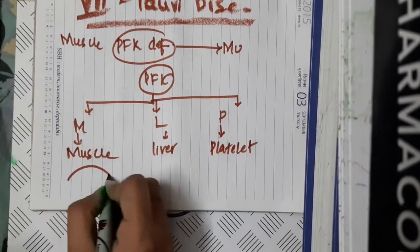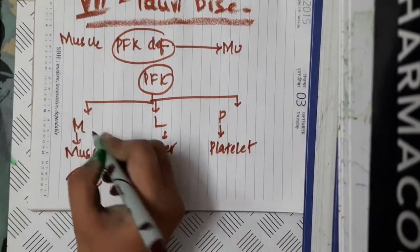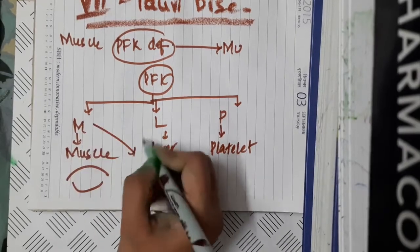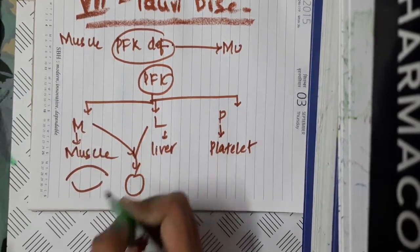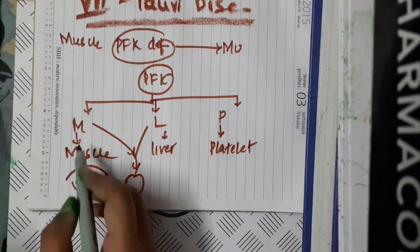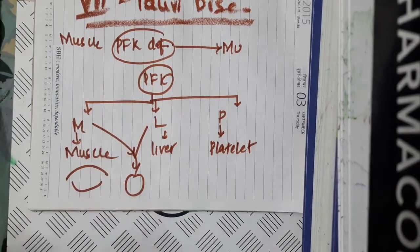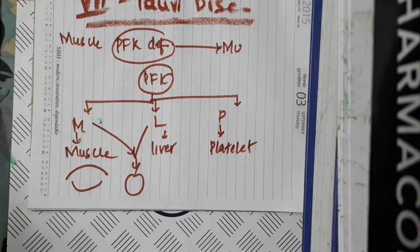M is present mainly in skeletal muscles, and the L and M forms can be present in RBCs. When there is a defect in this M form, only then you will see the occurrence of Tarui's disease.